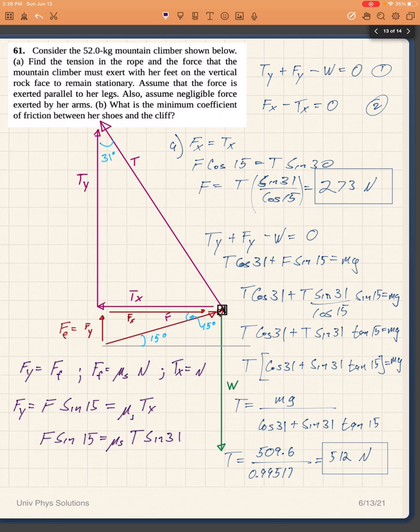I have a way to find my Fy, which is just going to be my force times the sine of 15, and that has to be equal to the coefficient of friction times my normal force, which is Tx, times the sine of 31. So I can find the coefficient simply by algebraically solving that equation, which would be F sine of 15 over T sine of 31.